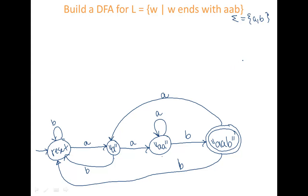Let's do our formal description. So my set of states, Q, is going to be reset, "A" (in this case I put it in quotes just to keep it different from the character A), AA, and then AAB. So that's Q.